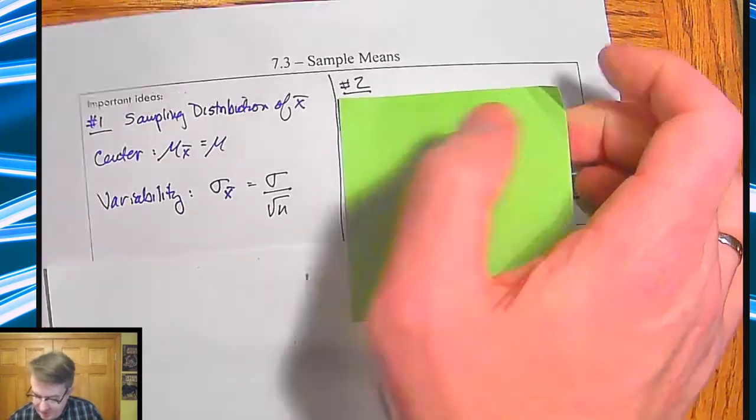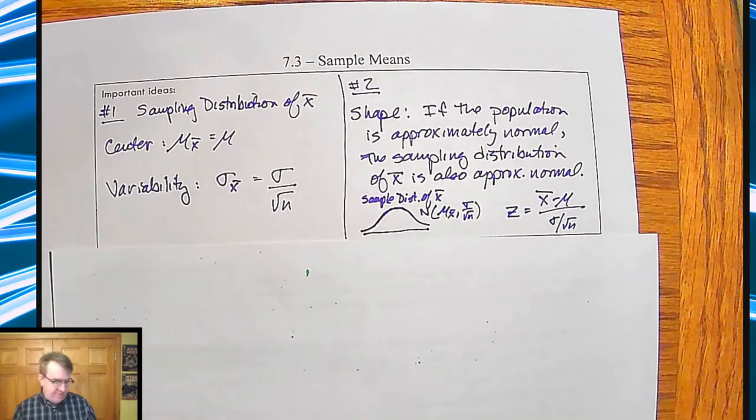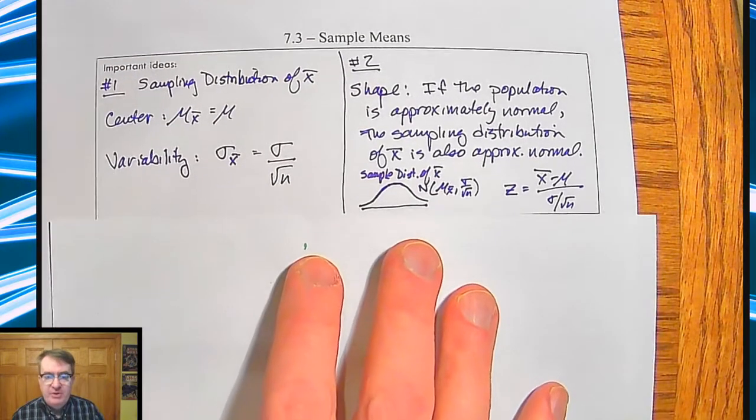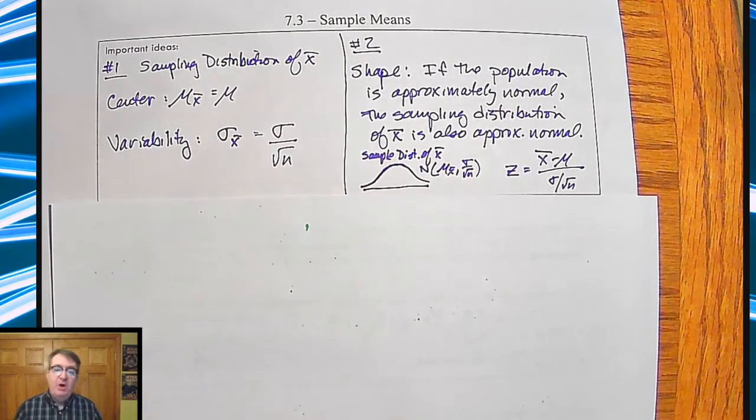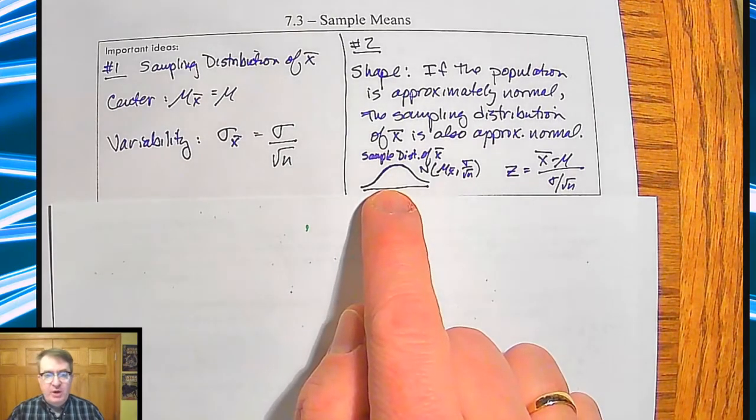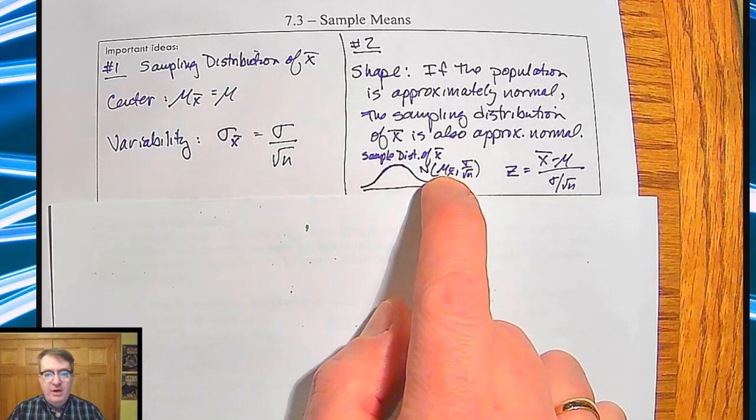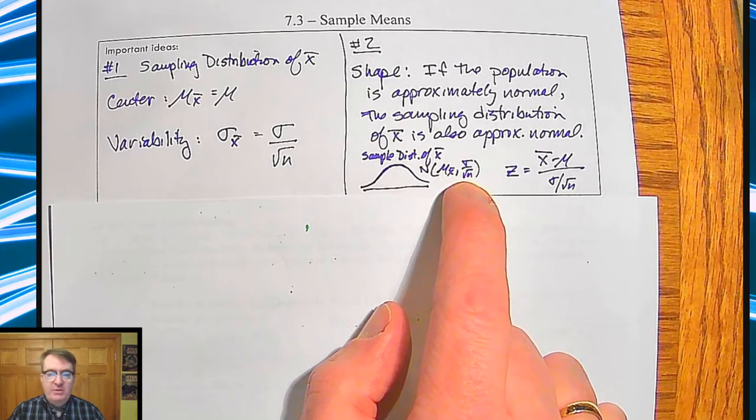Now in terms of the graph itself, the shape is going to be approximately normal if the population is approximately normal. The sampling distribution of x bar is also going to be approximately normal. So you would end up drawing a normal curve. You've got the mean of x bar, and then you also have the standard deviation divided by the square root of n.